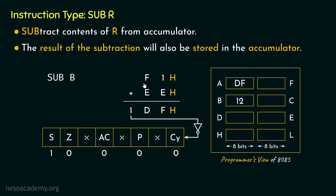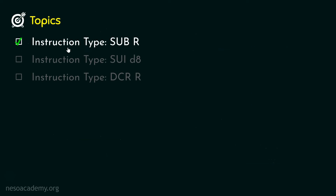So this is how the microprocessor executes the SUBB instruction. With F1 in the accumulator and 12 in register B, the result DF is stored in the accumulator. The result of the subtraction is stored inside the accumulator, and all flags in the flags register are affected accordingly. Remember: for SUBR, there are 8 different instructions and this instruction type falls under the 1-byte-long instructions category.